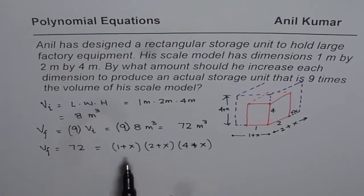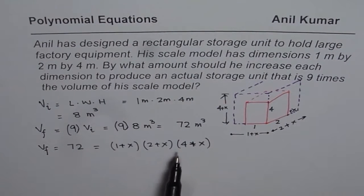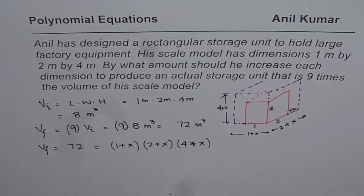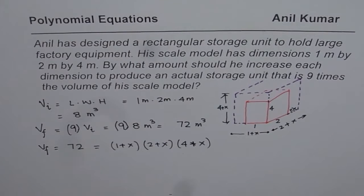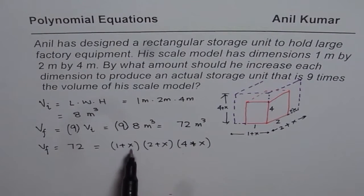Now to solve this polynomial equation, you can expand, bring 72 on this side, and then find the zeros, as the student has done. That is one approach. However, my suggestion is that at times, what you can do is, you can substitute values for x and then calculate what value of x will give you 72.